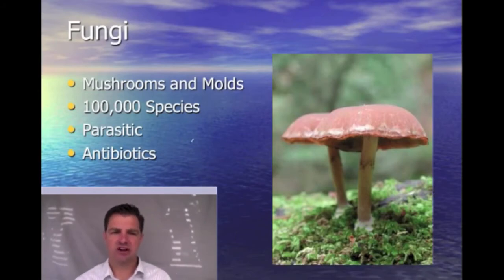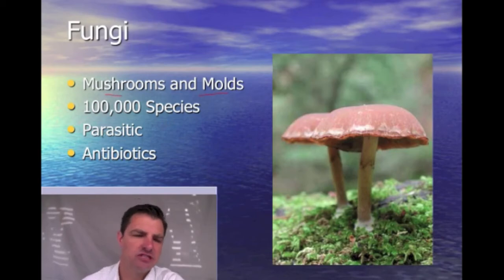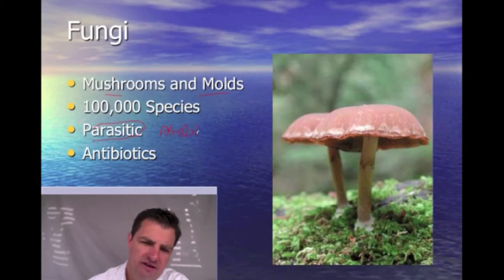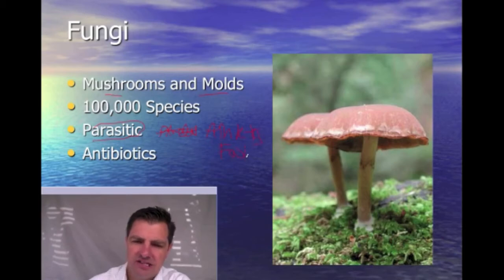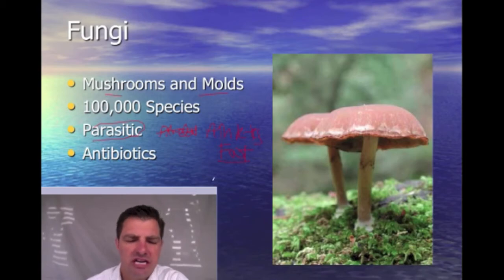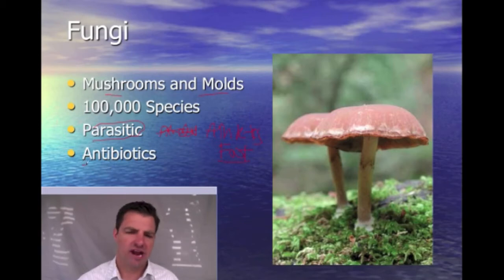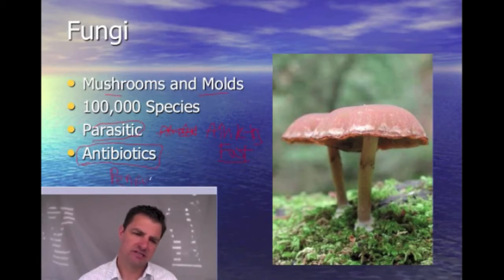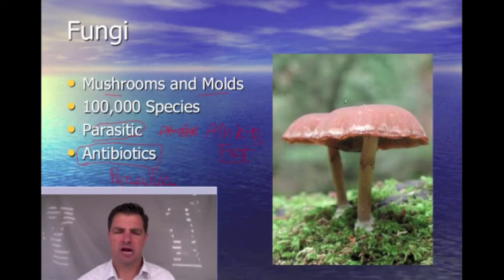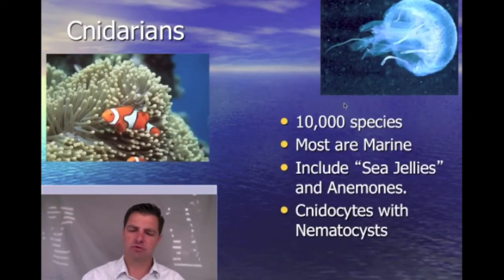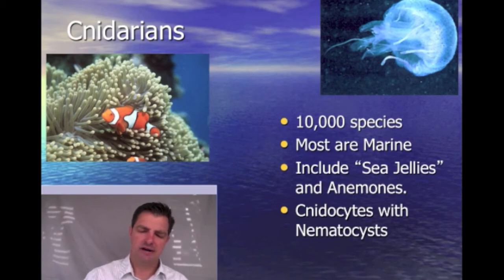The next group are the fungi — things like mushrooms and molds, about a hundred thousand species. Some of them are parasites: athlete's foot, which you've probably heard of, is a fungal infection you can get on your feet or fingernails. Many of our antibiotics, particularly the penicillins, came from fungi — specifically mushrooms — which is a very important contribution. Fungi are also important for breaking down decaying matter.